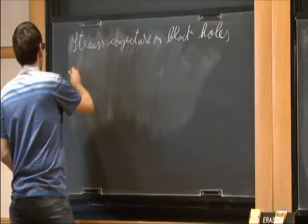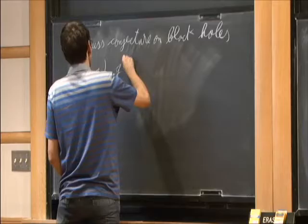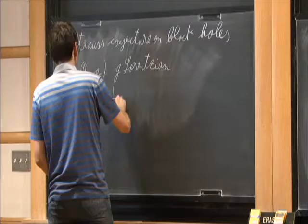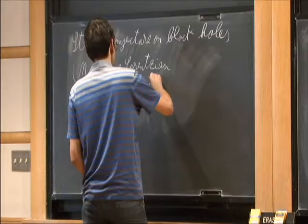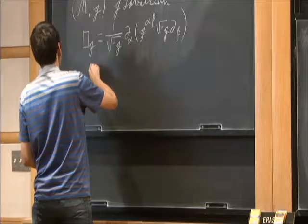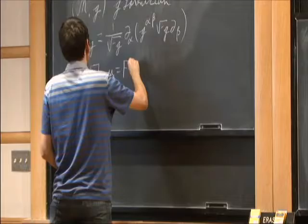Say you have some manifold M with a Lorentzian metric G. You can associate with it the usual d'Alembertian box of G, which equals 1 over square root of minus G, d alpha of G alpha beta square root of minus G d beta. We're looking at a semi-linear problem: box G of u equals f_p of u, with some initial data.